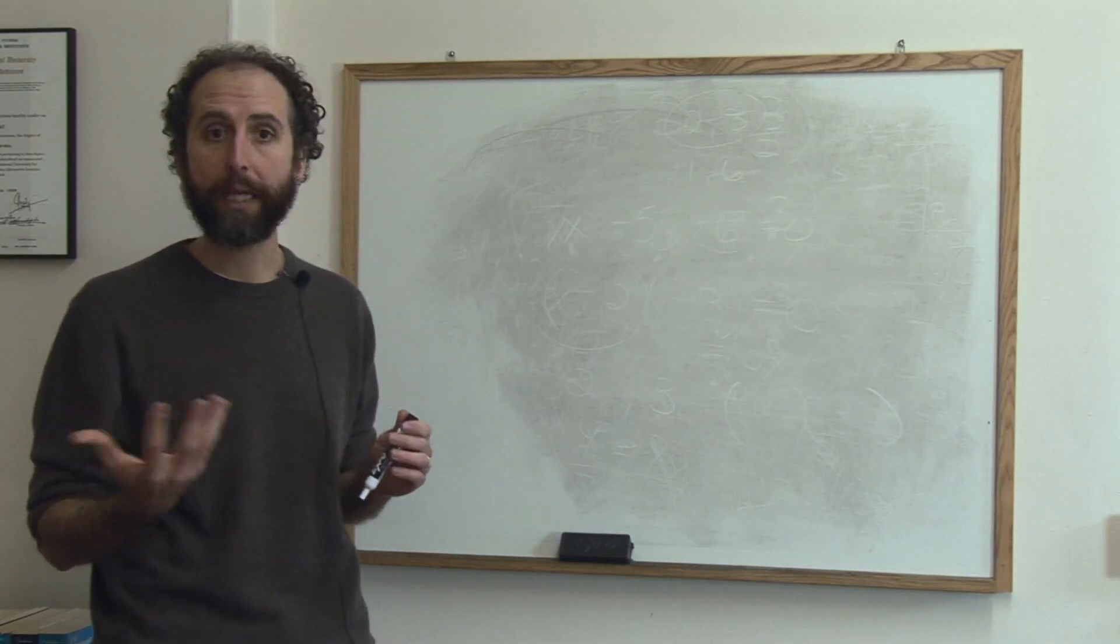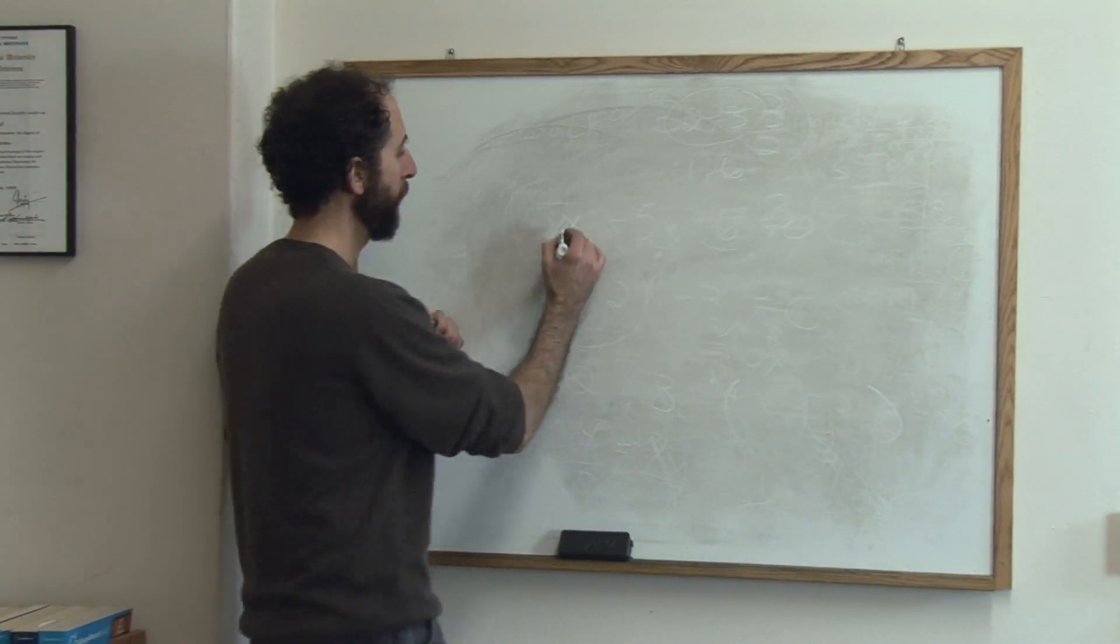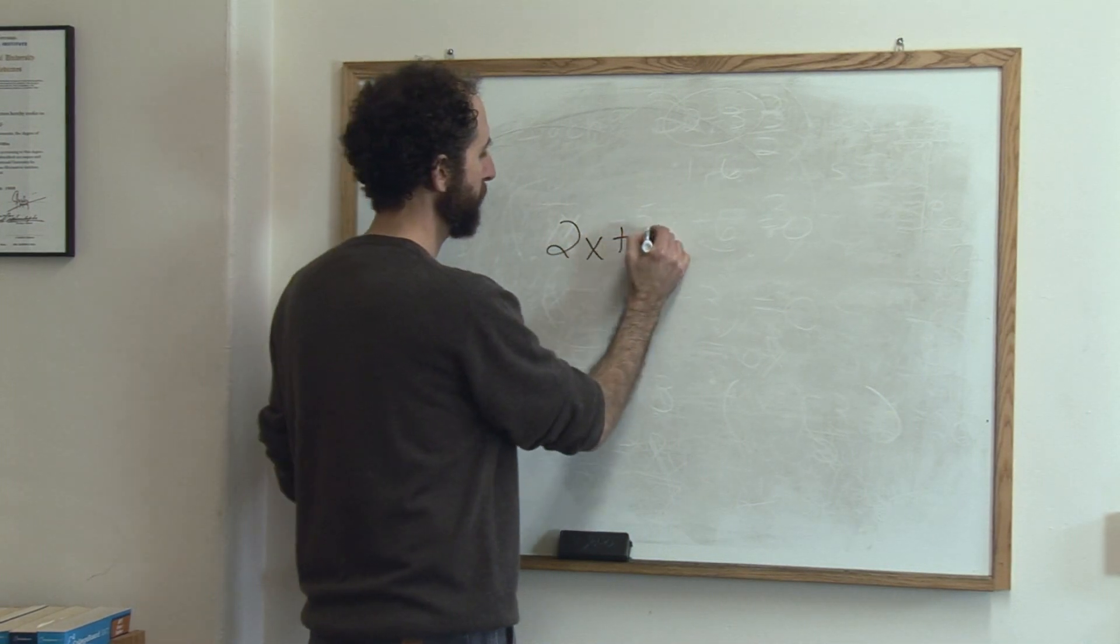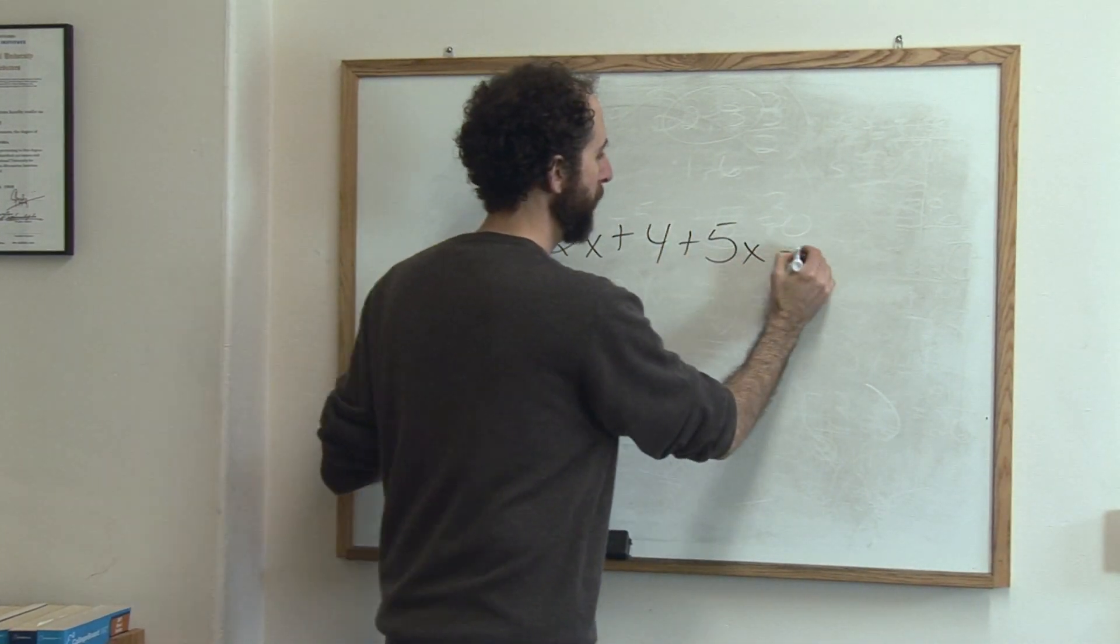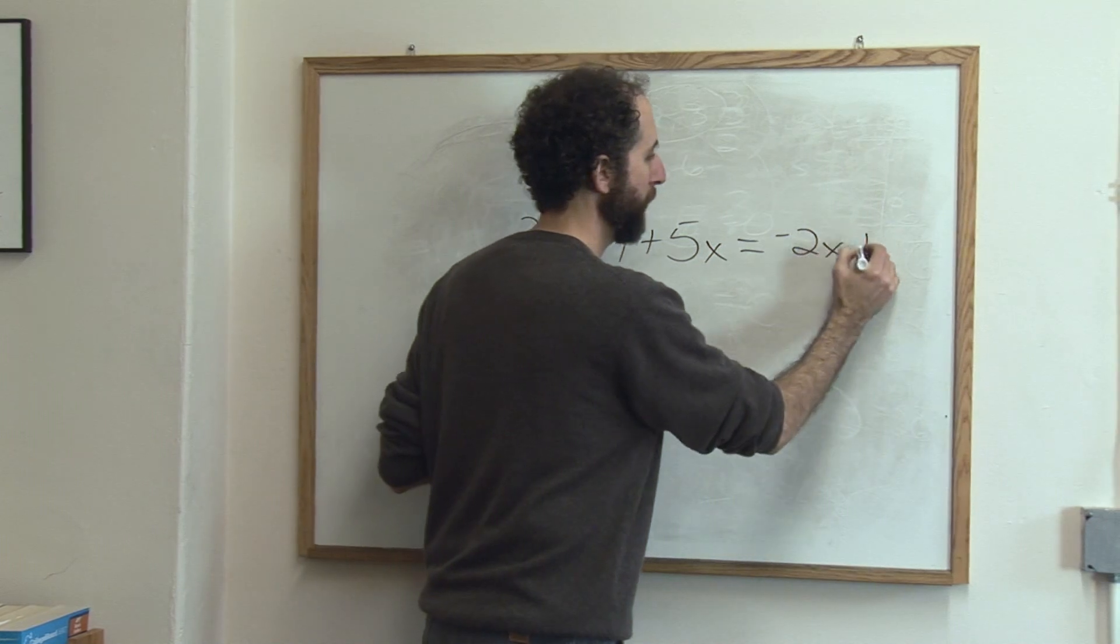Let's look at solving an equation that has some like terms in it. So say we had 2x plus 4 plus 5x equals negative 2x plus 3.